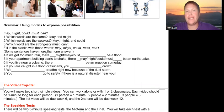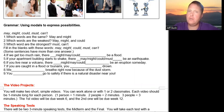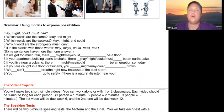Six, if you live near a volcano, there might, may, or could be an eruption someday. Seven, if you were caught in a flood or tsunami, you might drown, may drown, could drown. Because of the dust storm, we can't breathe right now. If there is a natural disaster near you, you must or should go to safety.